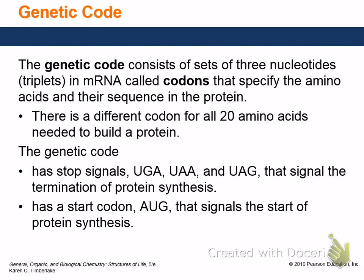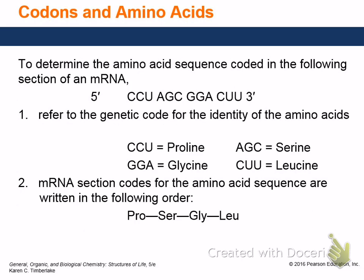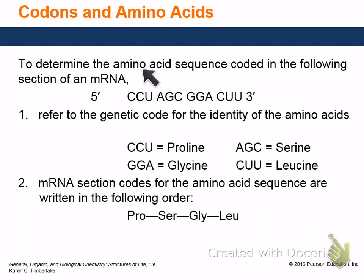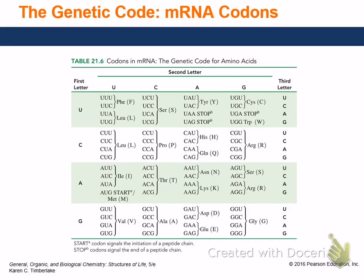Practice: determine the amino acid sequence coded in that section of mRNA. Each group of three nucleotides represents one codon. The first codon would be proline, the second codon GGA would be glycine, and the third CUU would be leucine. But if you didn't have a proper start and began in the wrong frame — say, starting at the second nucleotide — you'd get entirely different codons and the wrong protein, or no functional protein at all.